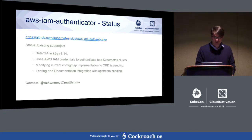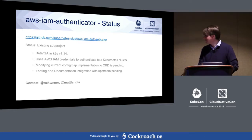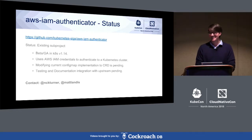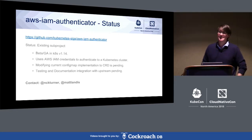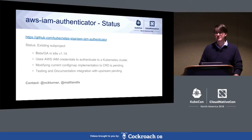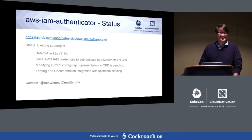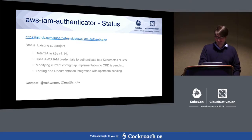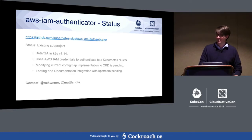The next project is the AWS IAM Authenticator, originally started by Matt Morris and Heptio. This allows use of AWS credentials to authenticate to the Kubernetes API server, which is a really nice integration. It's very handy both for end users and also if you had an EC2 instance you could use it for authentication there.